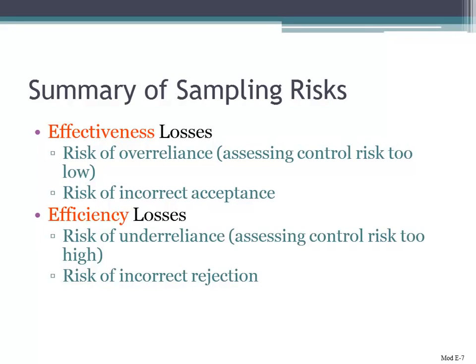That time you're spending could be better used looking at other things that might be higher risk. So if you have under-reliance on internal controls, you run the risk of incorrect rejection — basically concluding that you can't rely on internal controls and therefore performing more testing than necessary.